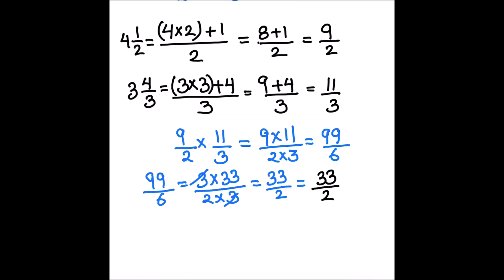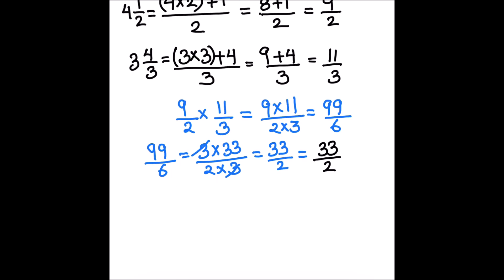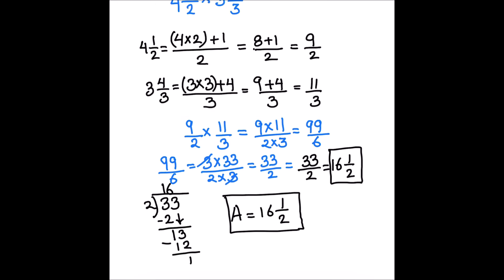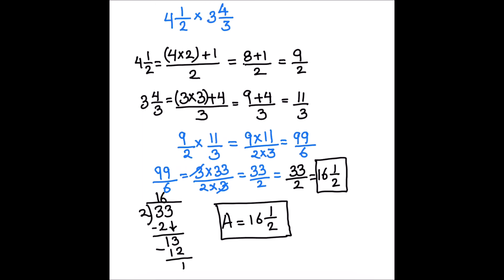Since we started with mixed fractions, it is good practice to write the final answer as a mixed number. Let's divide thirty-three by two to find the mixed fraction. Two goes into thirty-three — two times sixteen is thirty-two, with a remainder of one. So our final answer as a mixed fraction is sixteen and one half.